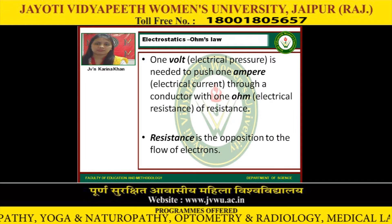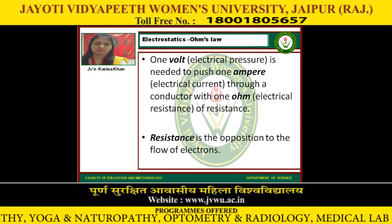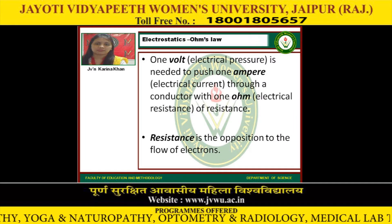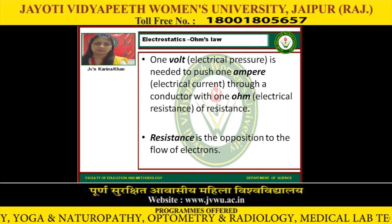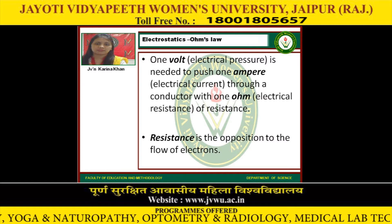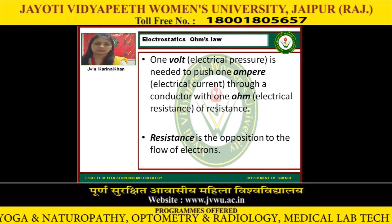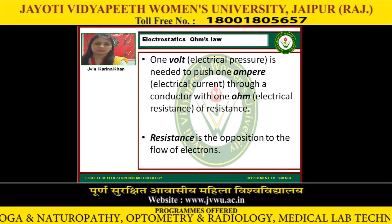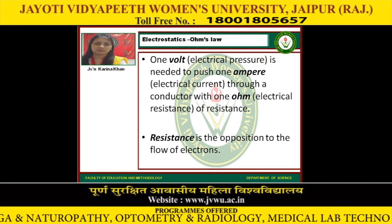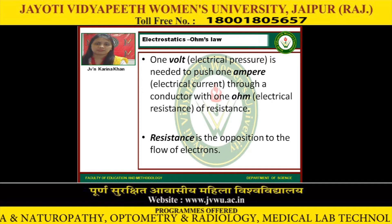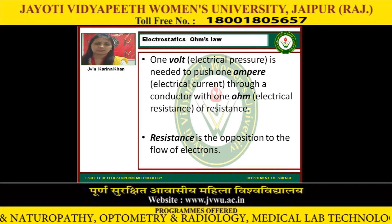Here, 1 volt — the electrical pressure — is needed to push 1 ampere — the electric current — through a conductor with 1 ohm of electrical resistance. Resistance is the opposition to the flow of electrons.